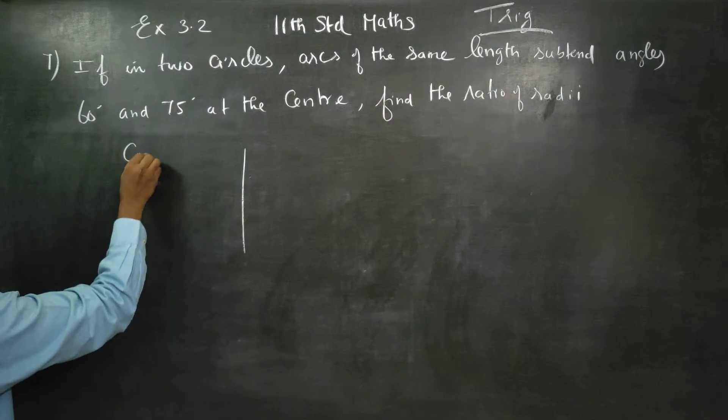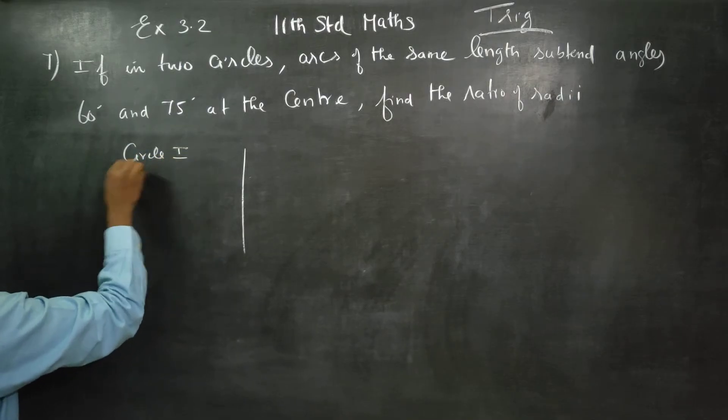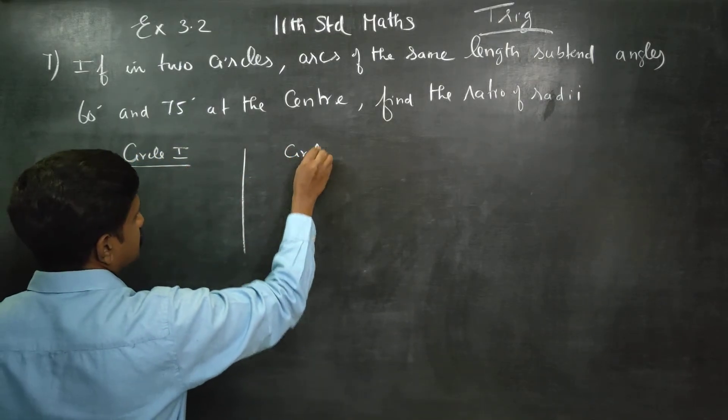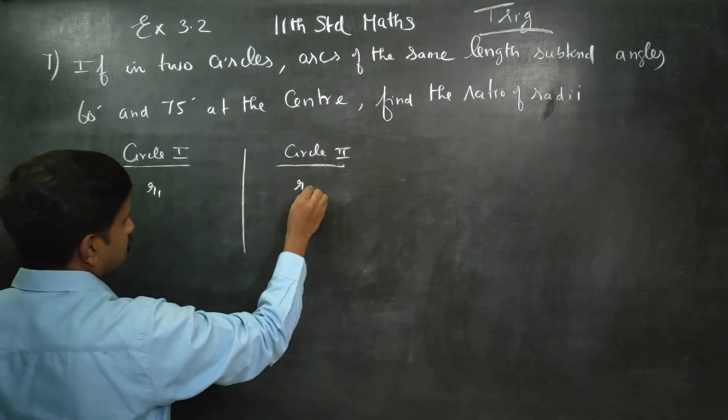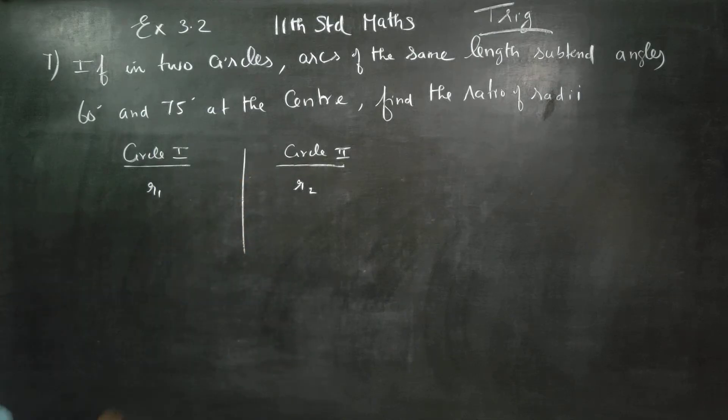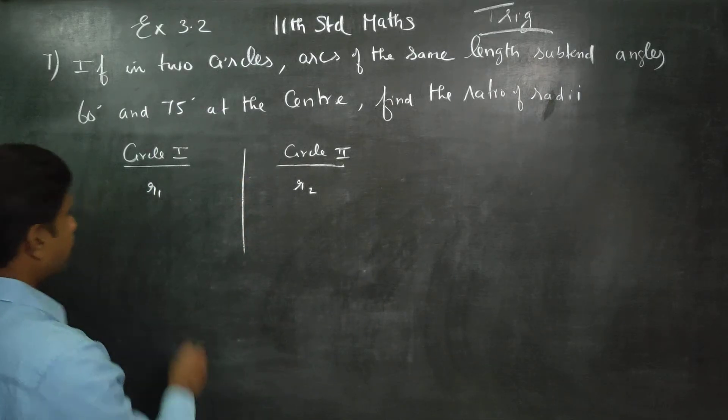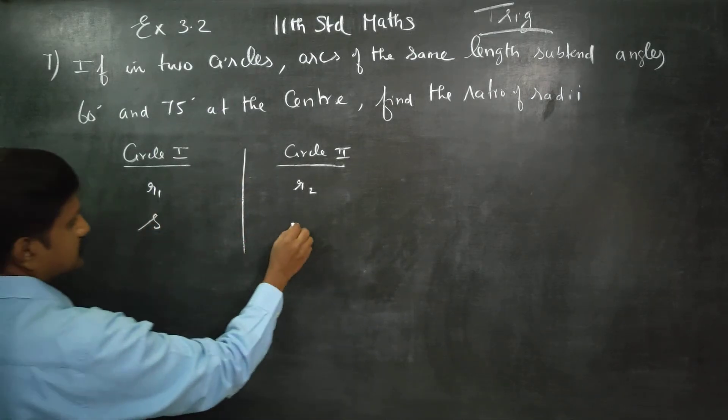Consider two circles. This is circle 1 and this is circle 2. Here, the radii are different. We need to find the ratio of the radii. But the arc lengths are one and the same.